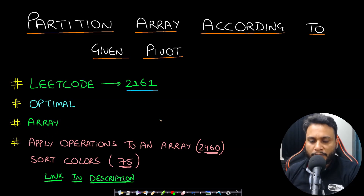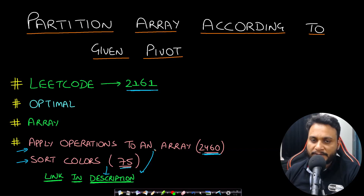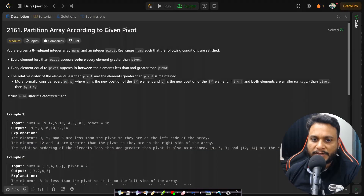Good problems to solve after having solved this are Apply Operations to an Array, which is from LeetCode 2460, and Sort Colors, which is from LeetCode number 75. Both of these I have already made, so the links will be present in the description below — you can go and check them out.